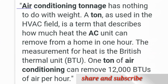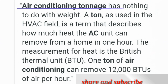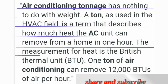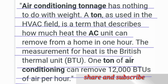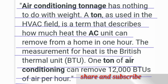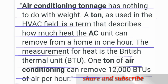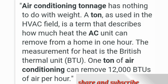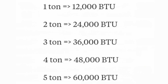Air conditioning tonnage has nothing to do with weight. A ton, as used in the HVAC field, is a term that describes how much heat the AC unit can remove from a home in one hour. The measurement for heat is the British Thermal Unit, BTU. One ton of air conditioning can remove 12,000 BTUs of air per hour.